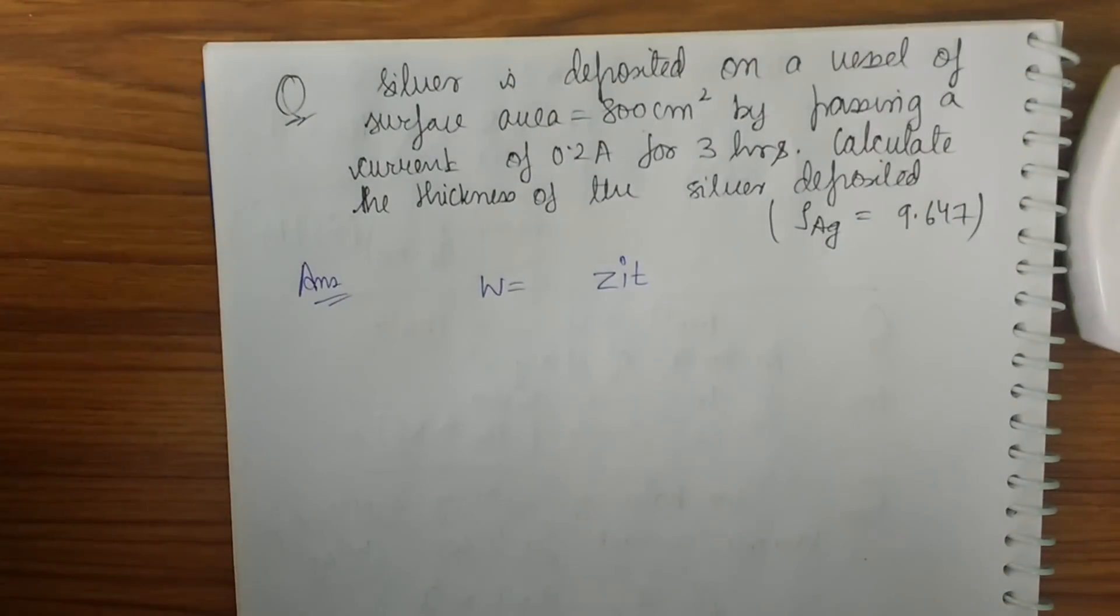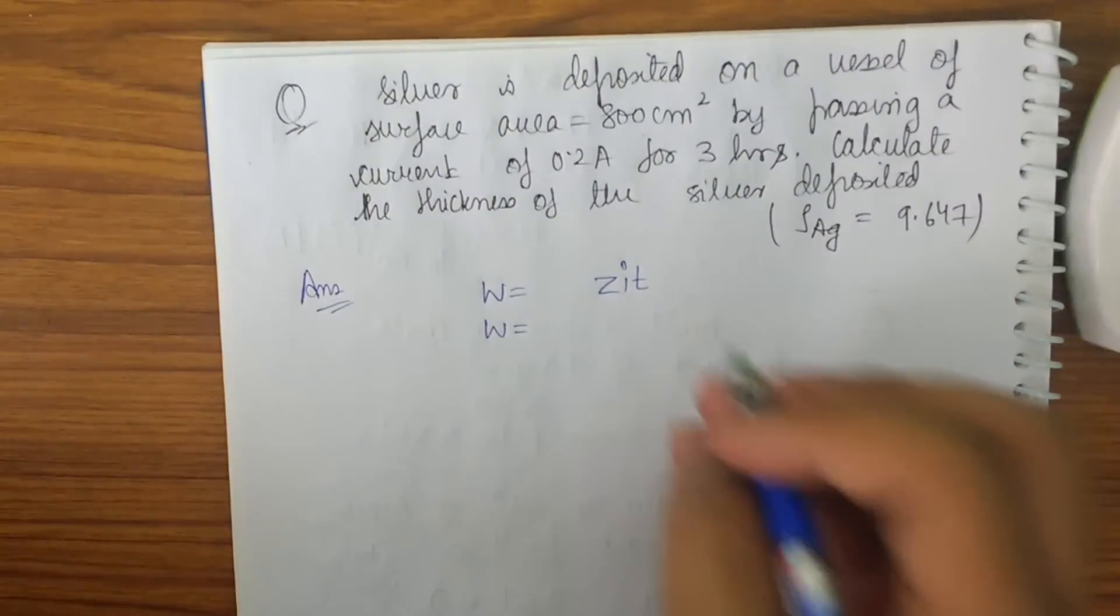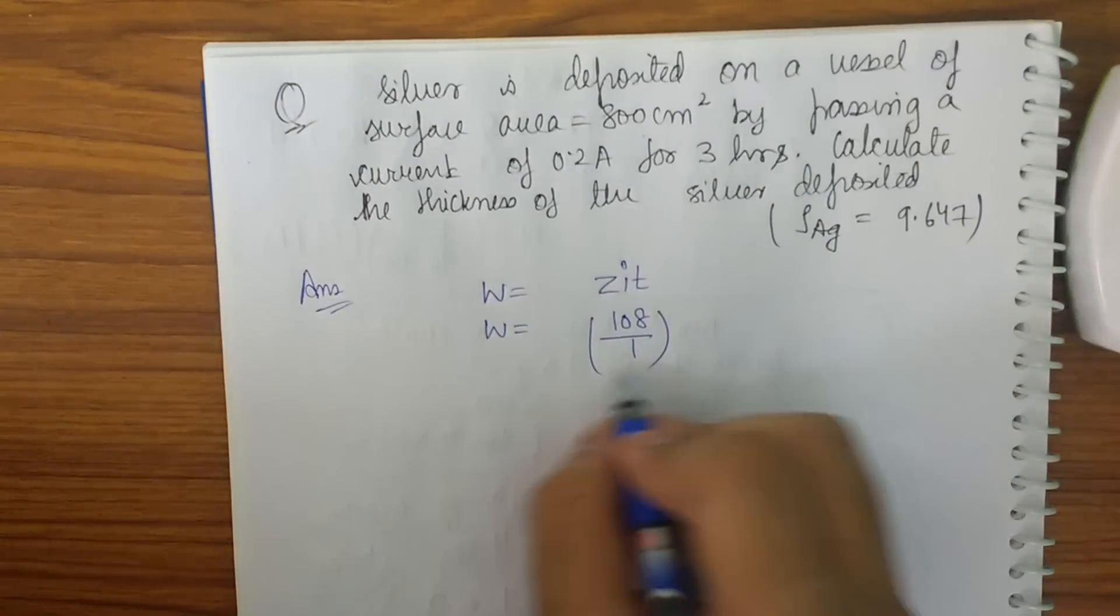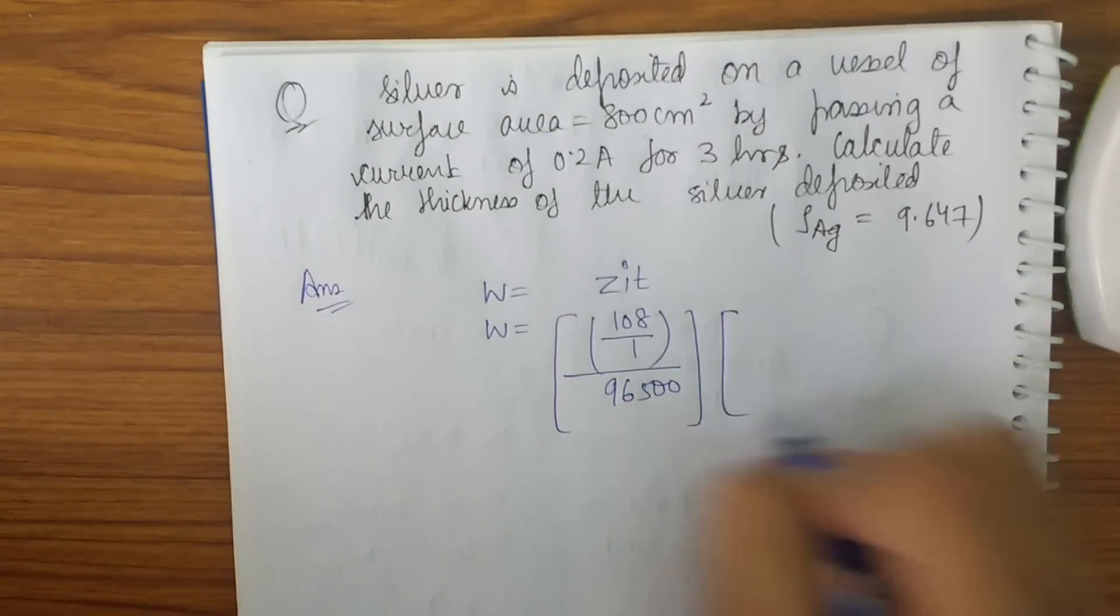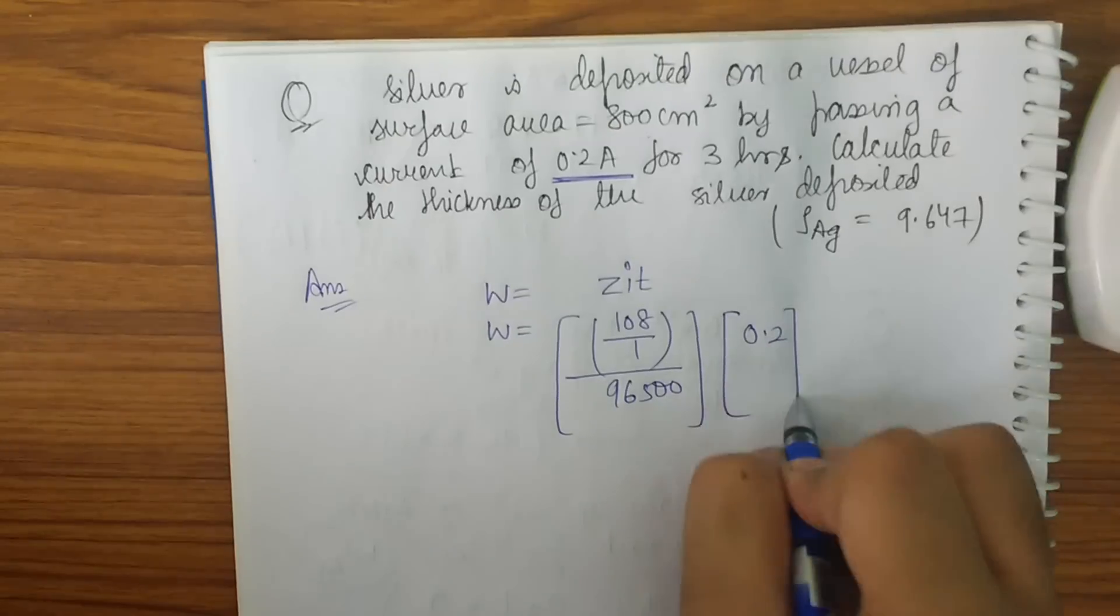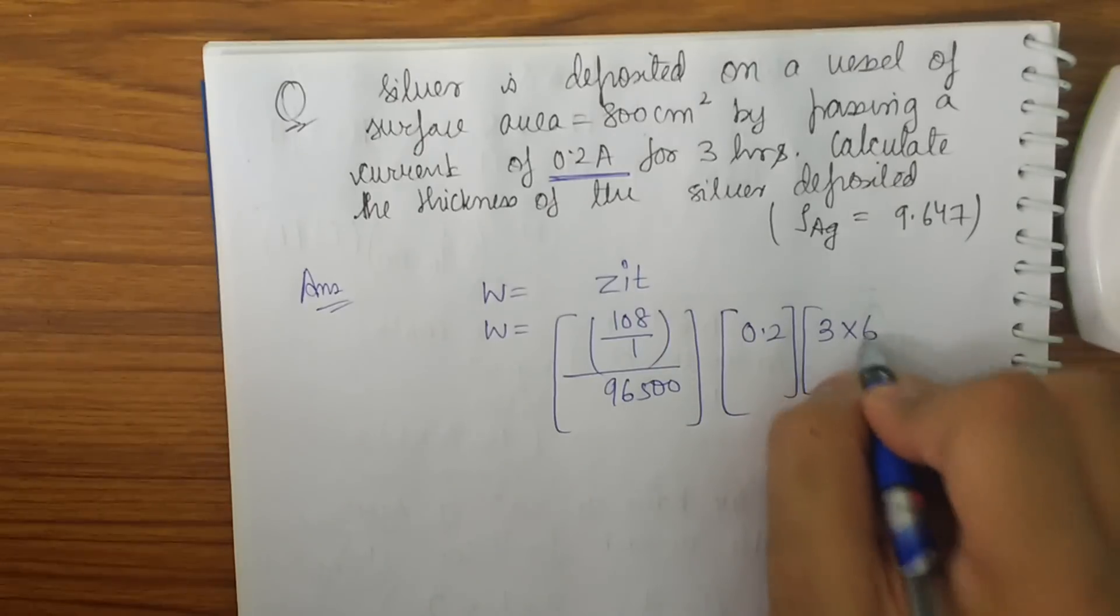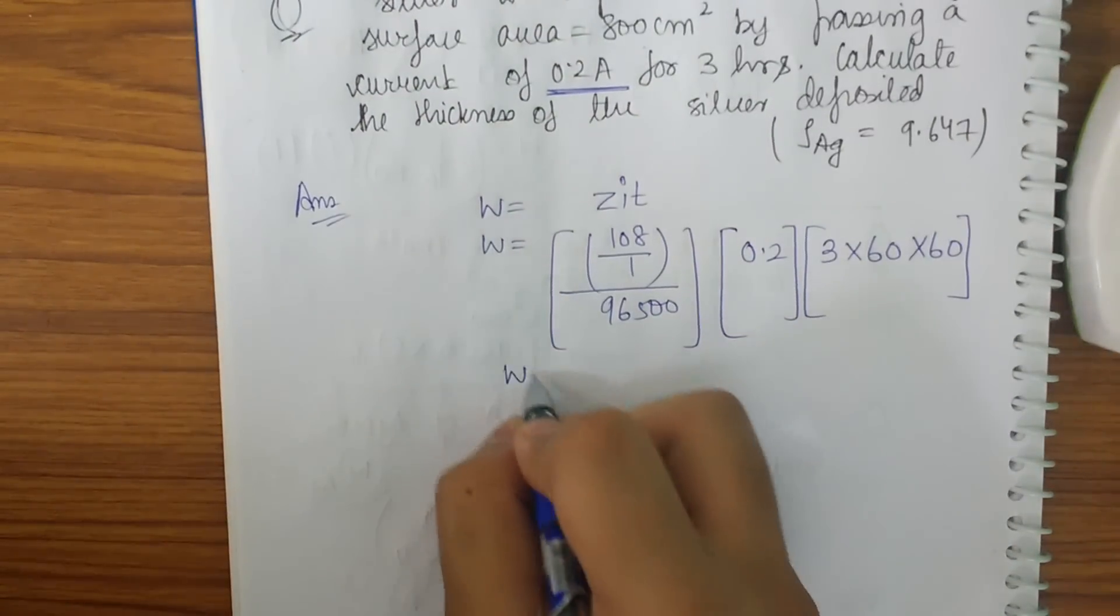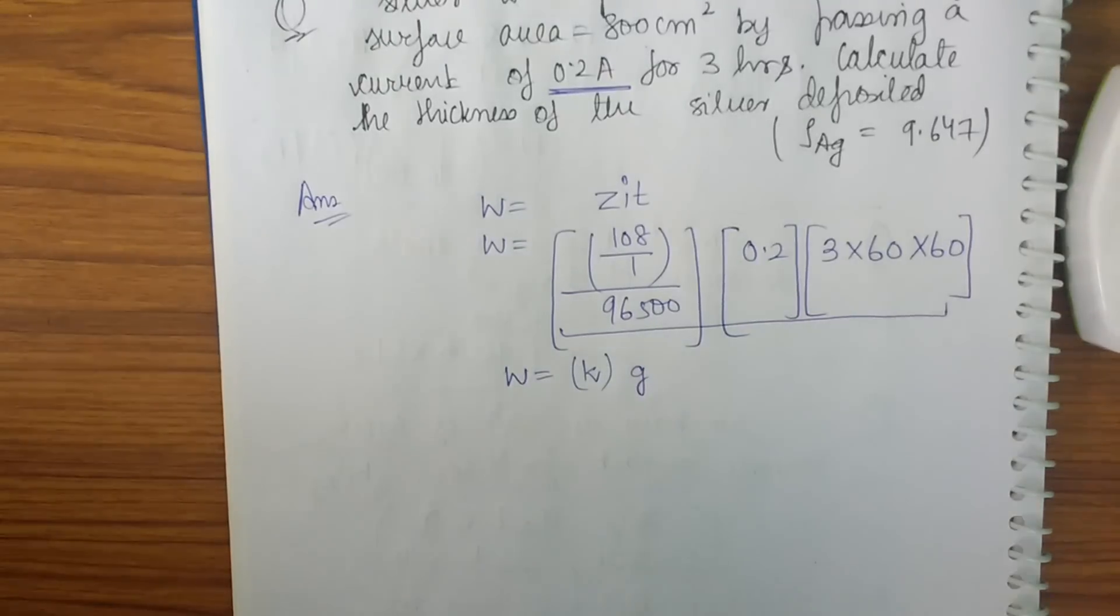So how to go along with it. So we all know that first we have to calculate the amount of silver deposited. So we know that w is equal to z i t. We also know that dw is equal to z integration i dt. But here it is a constant so we can directly replace. So w will be z. Now what will be z? 108 by 1. N factor for silver is 1. 96500. This is the z value. Now what is i? i is given to be 0.2. Now we have to convert the hours into seconds to get a proper value or the SI value. So 3 into 60 into 60. So this will be w. So let me take that. I will be getting a constant value. Let me assume it to be as some k. So some k grams.